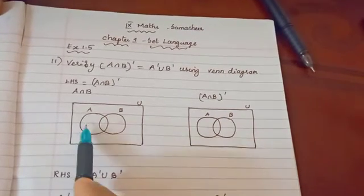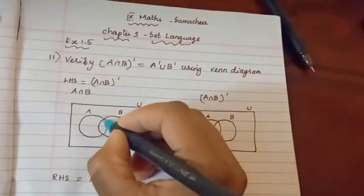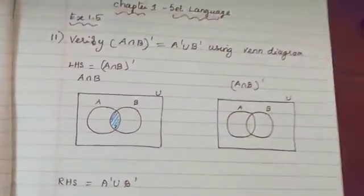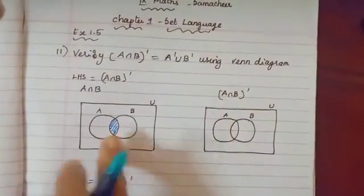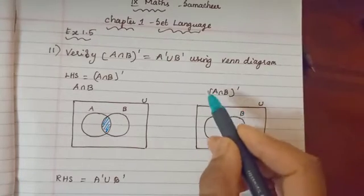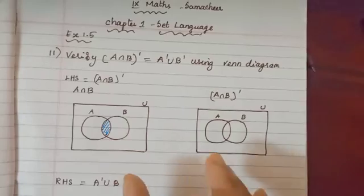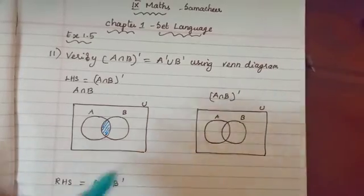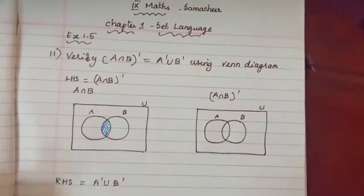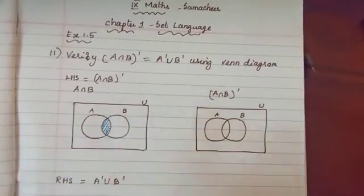We are creating a shape - the overlapping region. Shade A intersection B in blue color. Now, what do you mean by the complement of a set? It means that part except those parts - the remaining parts except the intersection region.